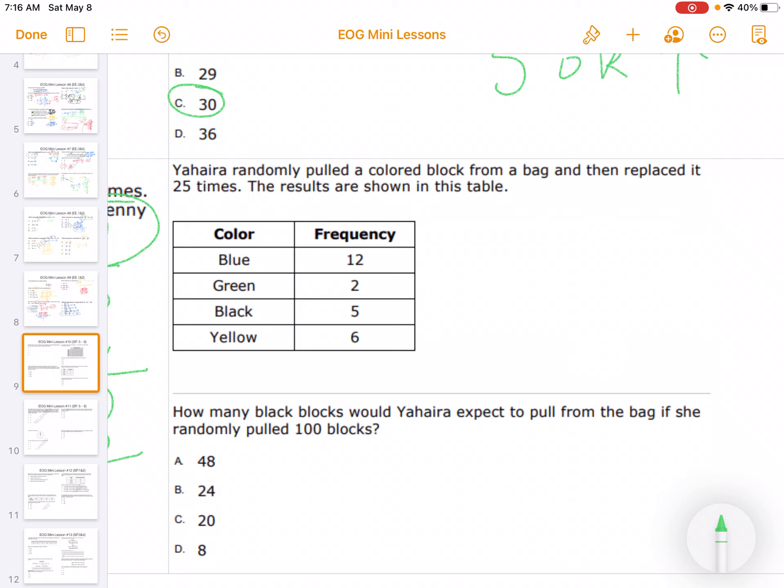Yahaira randomly pulled a colored block from a bag and replaced it 25 times. Here are the results shown in the table. How many black blocks would you expect Yahaira to pull from the bag if she randomly pulled 100 blocks?